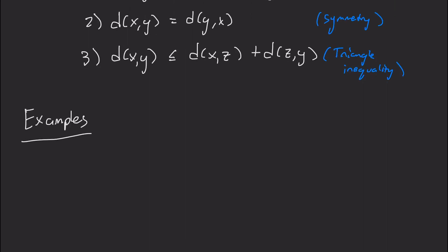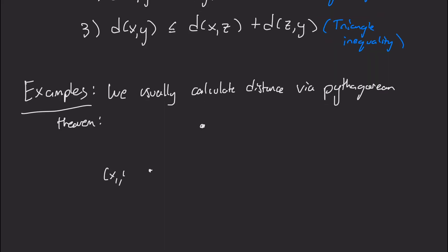Okay, so let's see some examples. So we usually calculate the distance via the Pythagorean theorem. So if I take two points on the plane, let's call them x1, y1, and x2, y2, then we can draw a straight line between them, and we can form this right-angled triangle, and the side lengths are going to be x2 minus x1, and y2 minus y1.